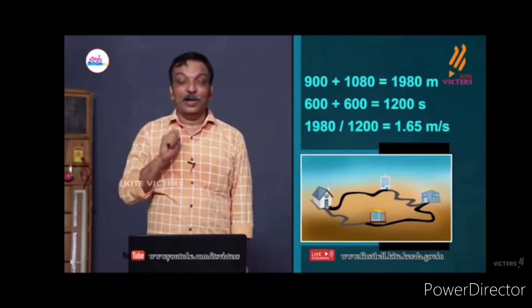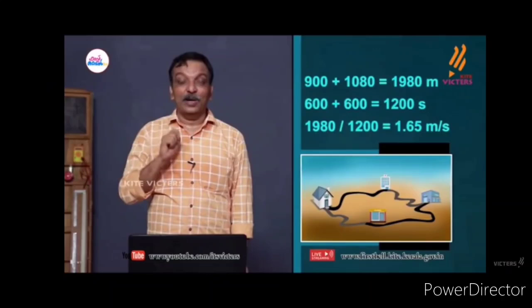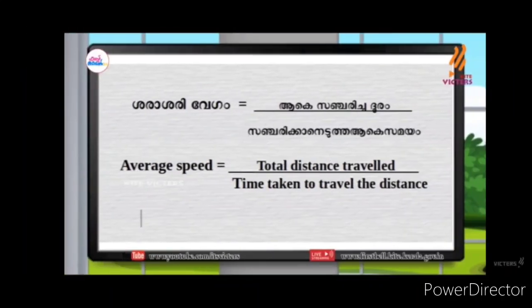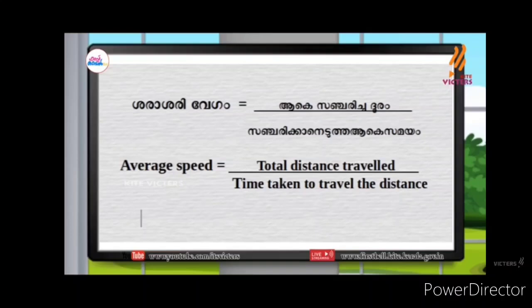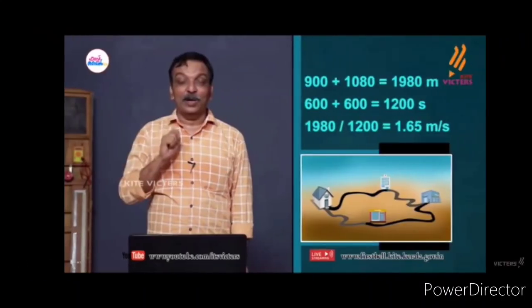That gives you 1.65 meters per second. Average speed is a formula: total distance traveled divided by time taken to travel the distance.